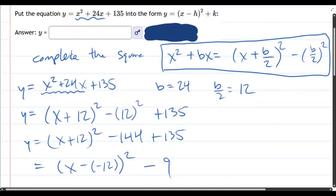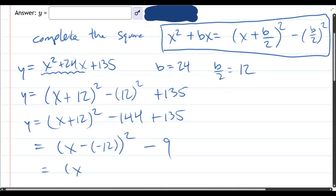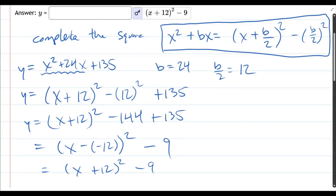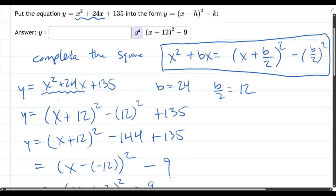All right, so we're done here. And I think this question will accept x plus 12 squared minus nine. Now, let's go ahead and uncover that answer. Fingers crossed. Yeah, so this reduced it to x plus 12 squared minus nine. All right. We're done.